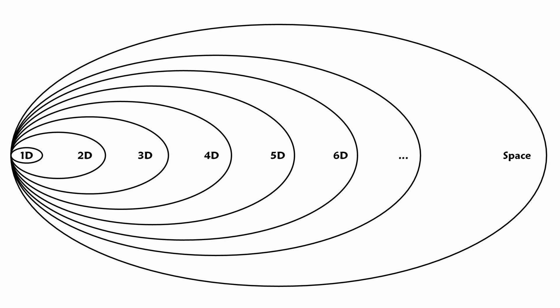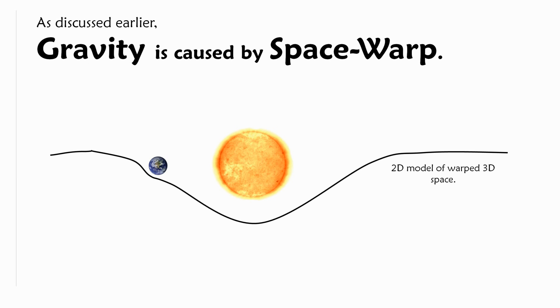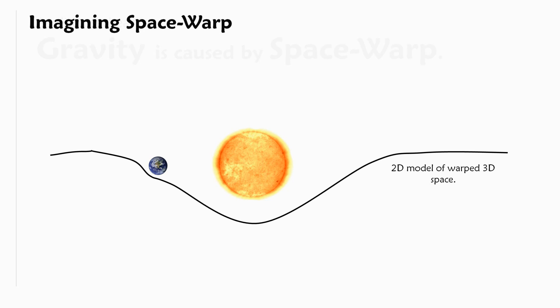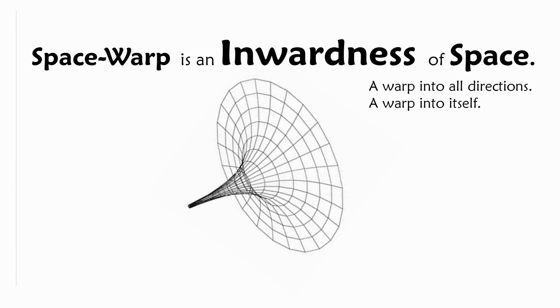This sounds like a strange question. As we discussed before, gravity is caused by space warp. Unfortunately, it is impossible to imagine space warp, except with models. So in this model we see that the sun warps space the most, but there is also some space warp around the earth. Of course, space warp is in all directions. That means that space is warped down and up and around at the same time. So space warp is an inwardness of space, a warp into all directions, a warp into itself.